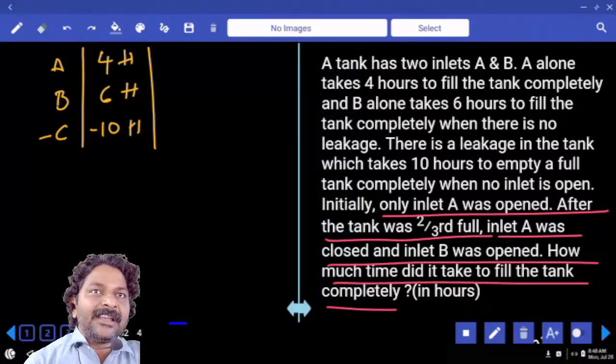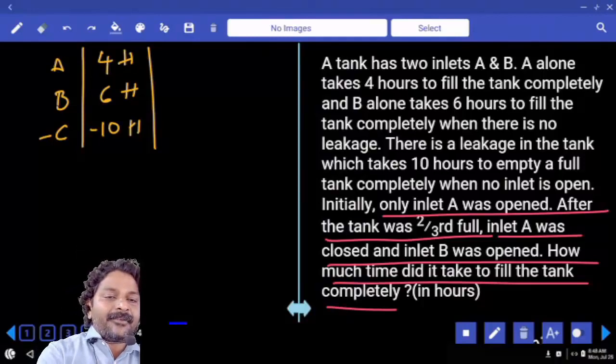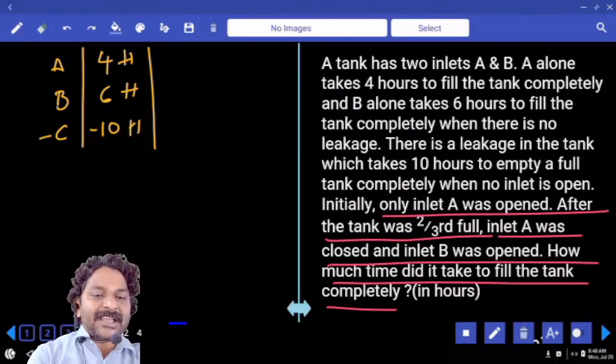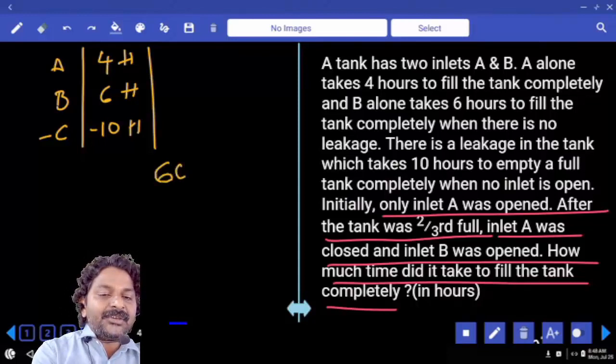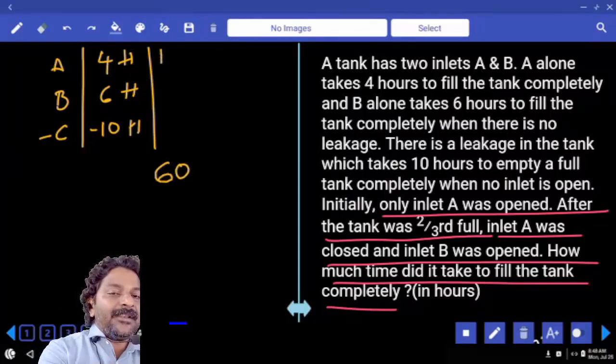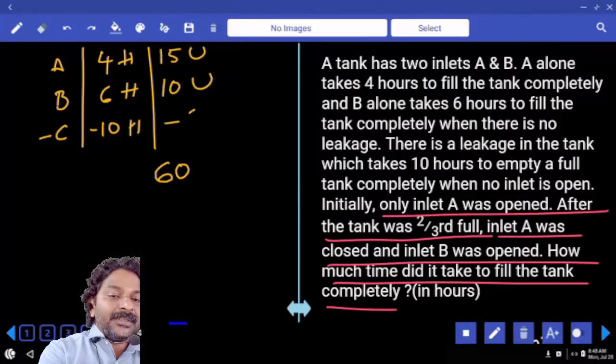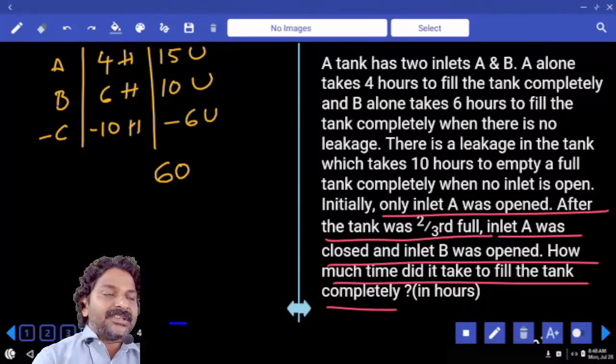Now there is a leakage in the tank, right? So LCM of all the numbers 4, 6, 10 is 60 units. A can fill 15 units, B can fill 10 units, C can empty 6 units.